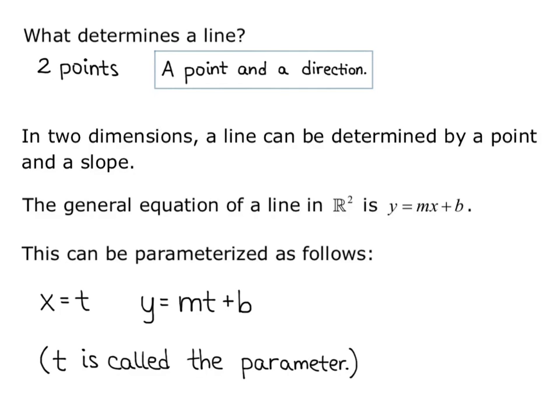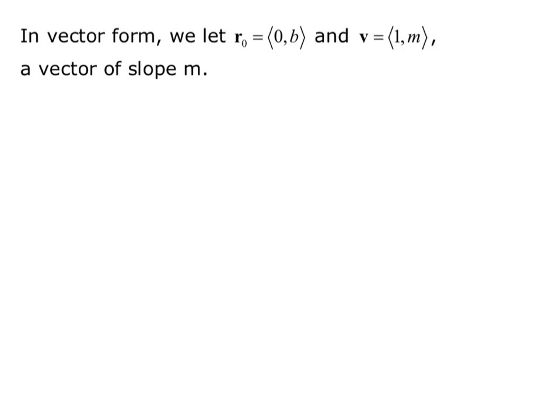So that's one way to express a line. In two dimensions, it doesn't make a whole lot of sense to do it this way, but in three dimensions, we'll have to parametrize or use a vector equation to give the equation of a line. In vector form, so now we're going to introduce a vector equation of a line. Let R0 equal the vector 0 comma b, and vector v equals 1 comma m, a vector of slope m.